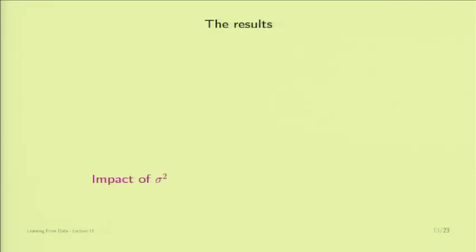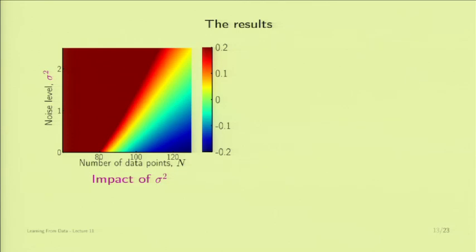This is what you get. For the impact of sigma squared, I plot N (number of examples) versus noise level sigma squared, with color indicating the intensity of overfitting—zero is green, redder means more overfitting, bluer means less. At 40 examples, all settings are dark red—terrible overfitting. Beyond 120, it's almost all blue. In this transition range: as you increase the noise level at any fixed N like 100 examples, overfitting worsens, going from green into red and deeper red.